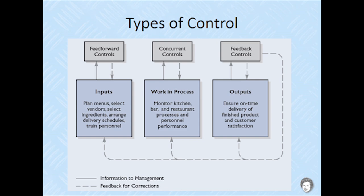Controls can be divided into three types depending on whether they occur before the process begins, during the process, or after it ceases. Controls that focus on operations before they begin are called feed forward controls. Their goal is to prevent defects and deviations from standards. Examples include maintenance, budgets, and training programs.